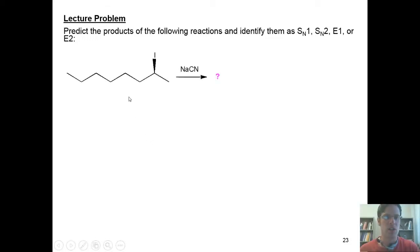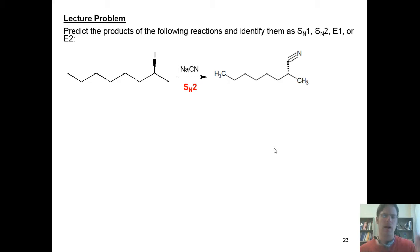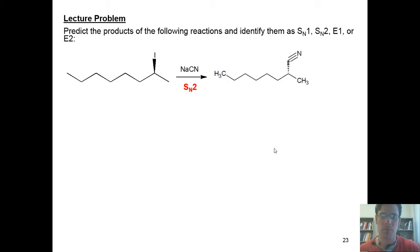In this first question, we're given this molecule right here, treated with sodium cyanide. What is the reaction going to be? The reaction's going to be SN2, and the product is going to be this. Keep in mind, I'm only showing you the major products of these reactions. There might be other minor products that could be formed, but I'm not interested in those.